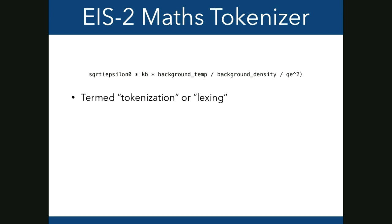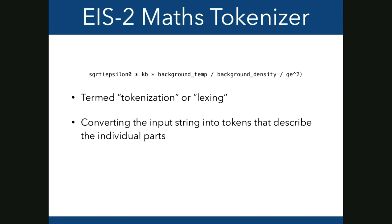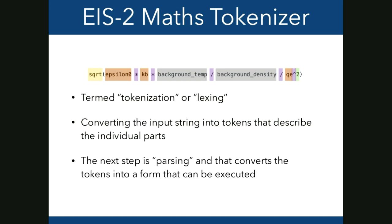The tokenizer converts an input string into tokens that describe individual parts. For example: '2' is a numerical literal; 'sqrt' is a function; 'epsilon_0', 'KB', and 'QE' are physical constants built into the code; 'background_temp' and 'background_density' are user-specified constants; and asterisk, slash, and caret are operators. You split the expression into those tokens, and then the next step — parsing — converts the tokens into a form you can execute.